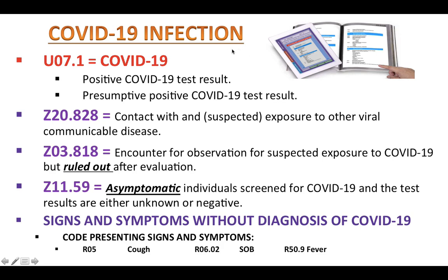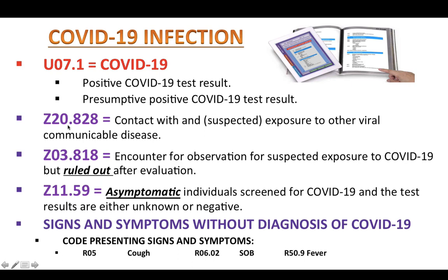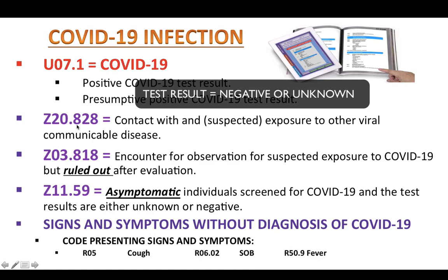How to code COVID-19 cases: First, U07.1 is assigned for those who have positive COVID-19 test results or presumptive positive COVID-19 test results. For cases where there is actual exposure to someone confirmed to have COVID-19 and the exposed patient either tests negative or results are unknown, use code Z20.828 — contact with and exposure to other viral communicable disease.